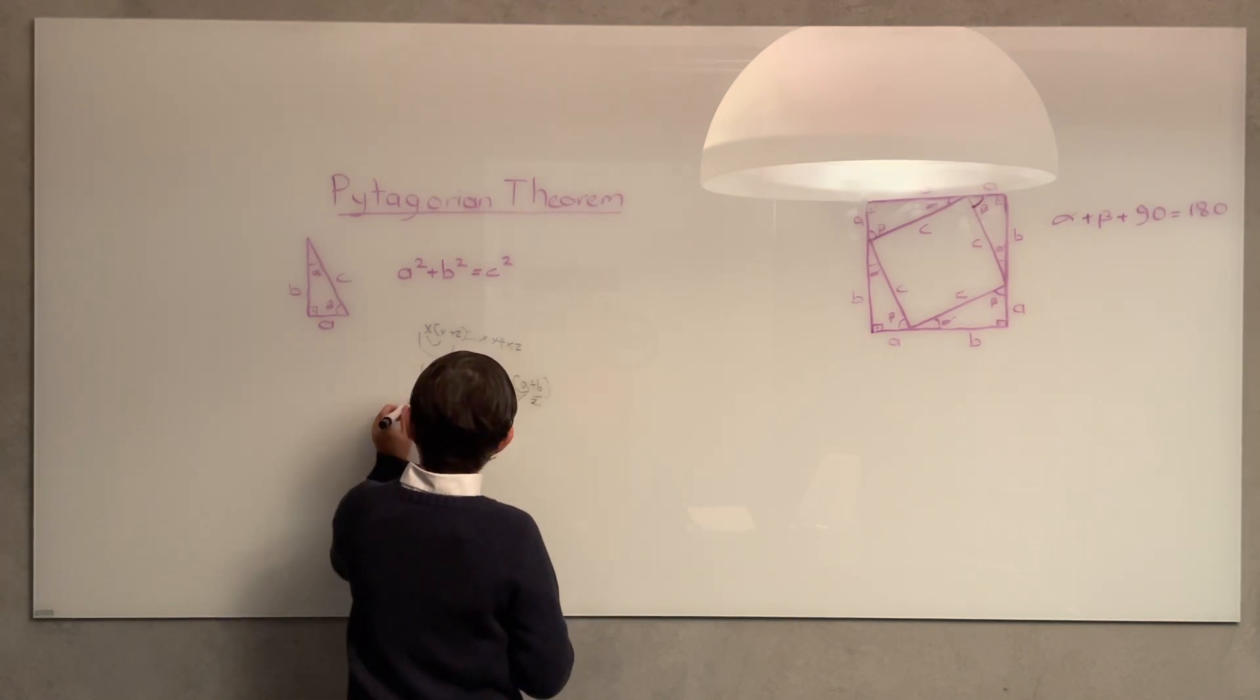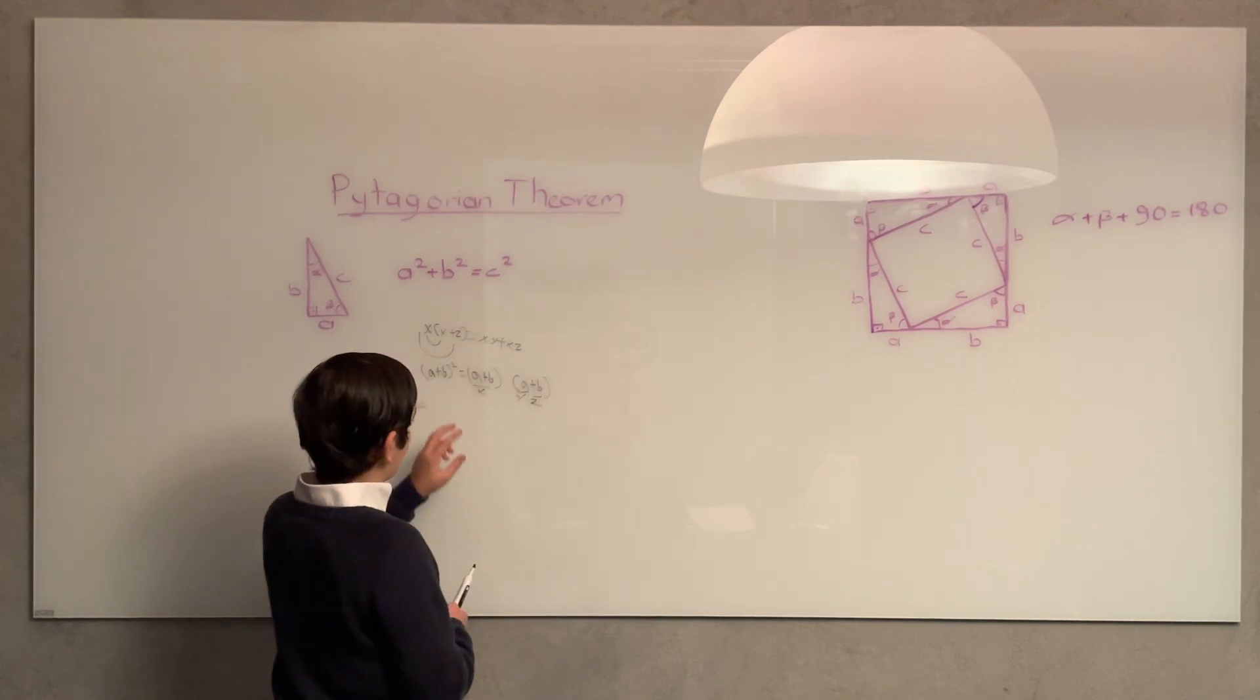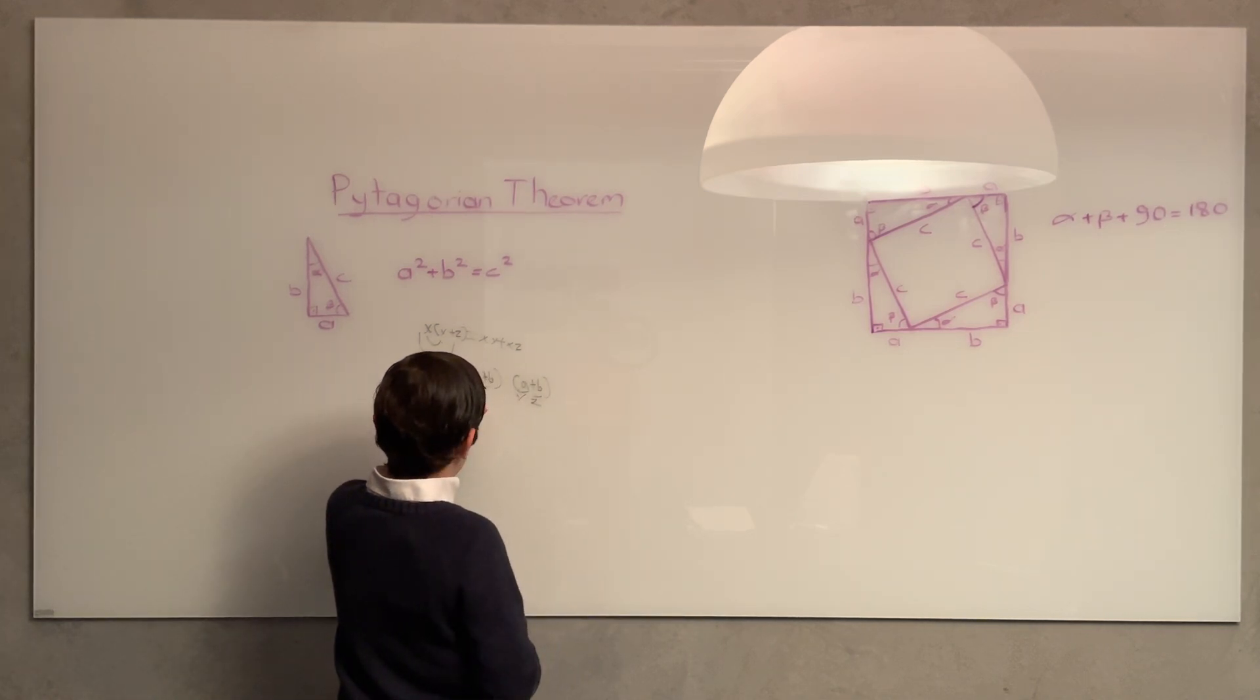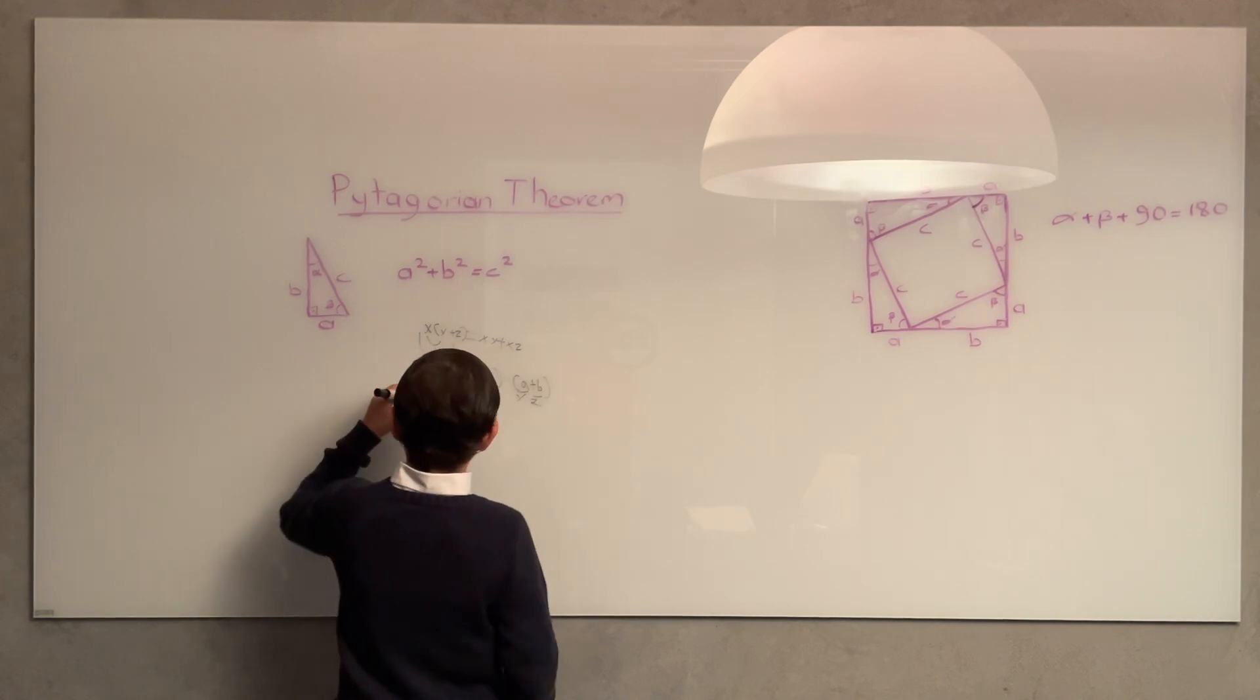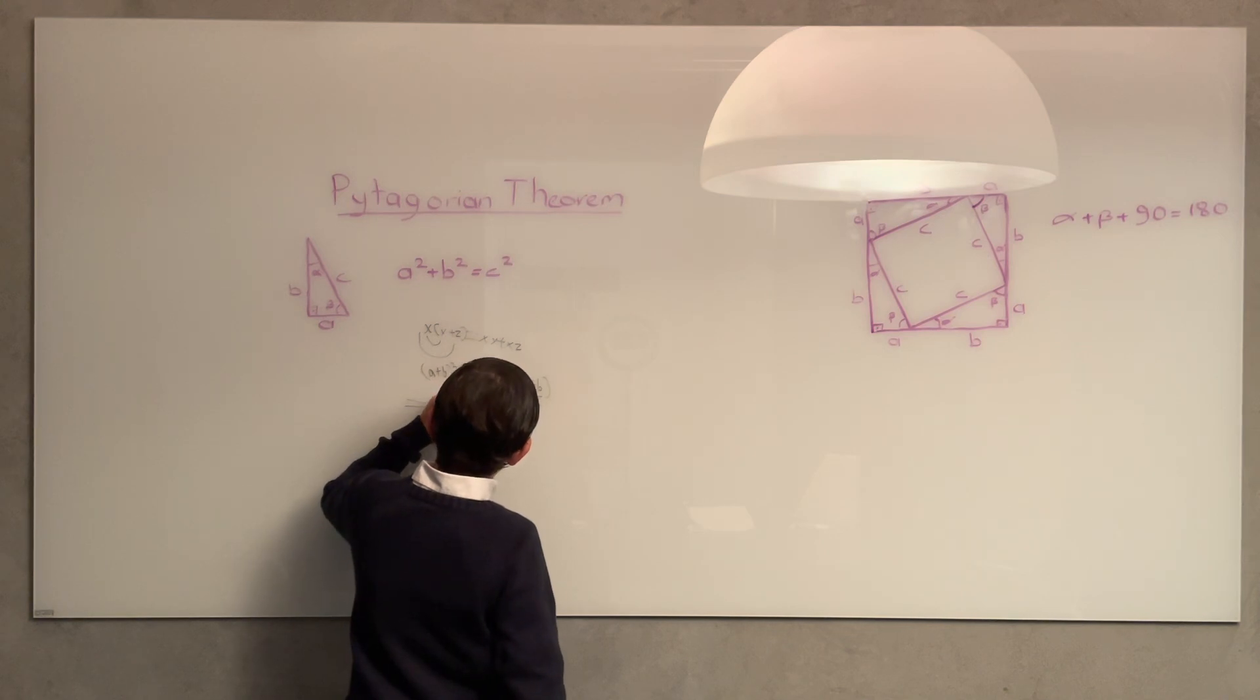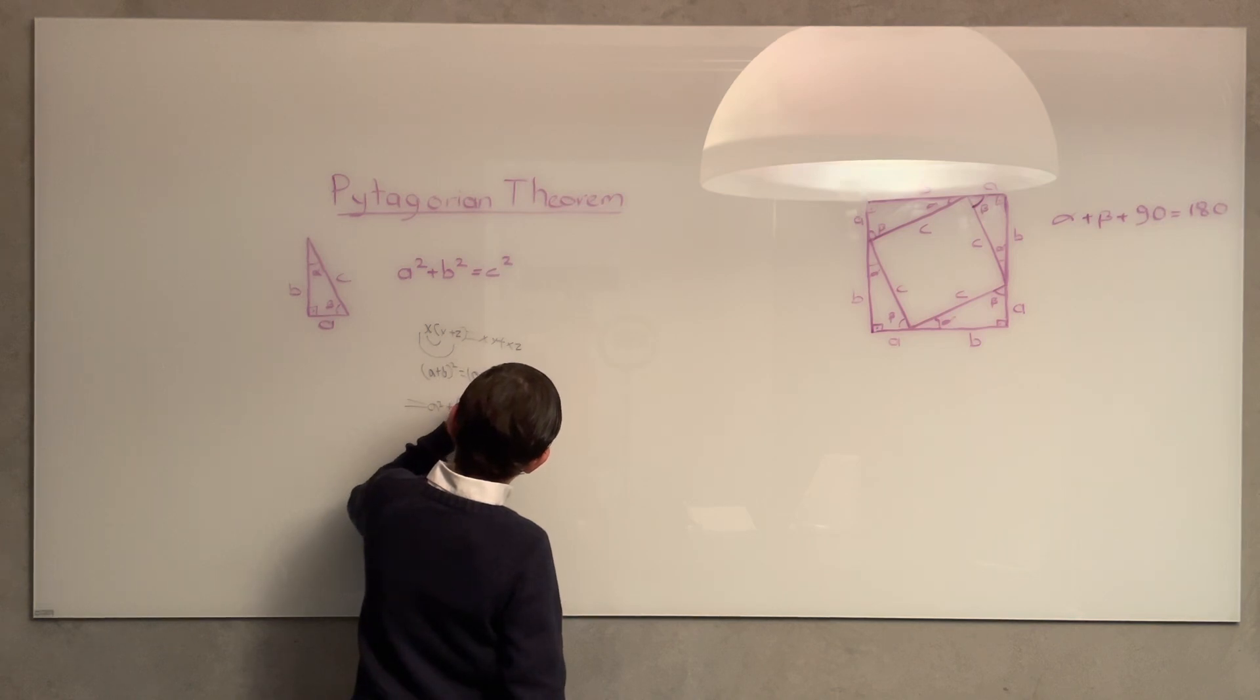Now, we're going to be multiplying. (a + b) times a, which is xy, would be a² + ba. Then (a + b) times b, which is xz, would be ab + b².